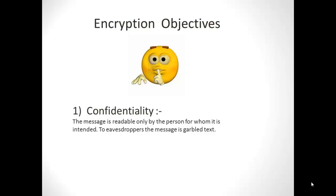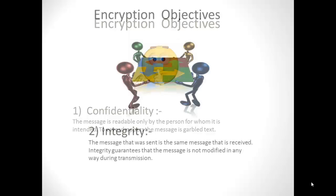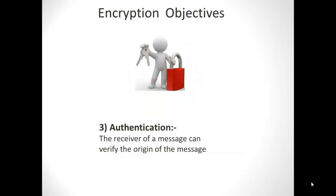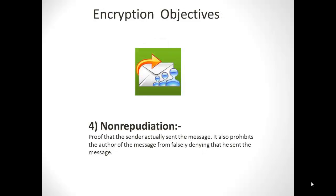Now let's look at some objectives of encryption. The first is confidentiality, which guarantees data is accessible by intended users only. The second is integrity, which assures that the received data is the same as the sent data, eliminating the risk of modification during transmission. The third is authentication, which ensures only users with valid keys can decrypt it. The fourth is non-repudiation — a sender cannot deny that he or she sent the message.